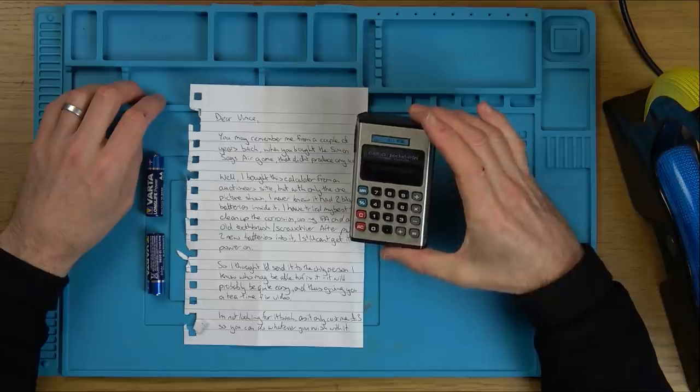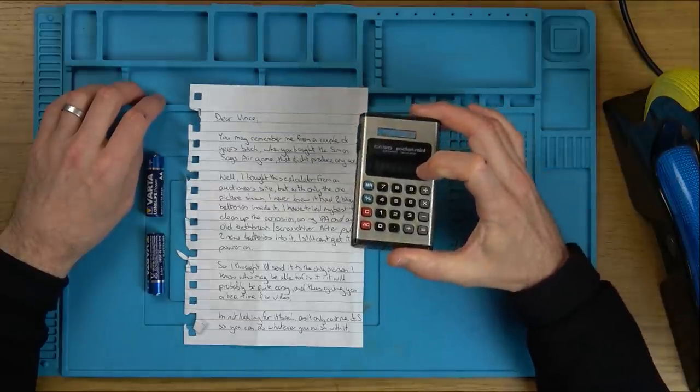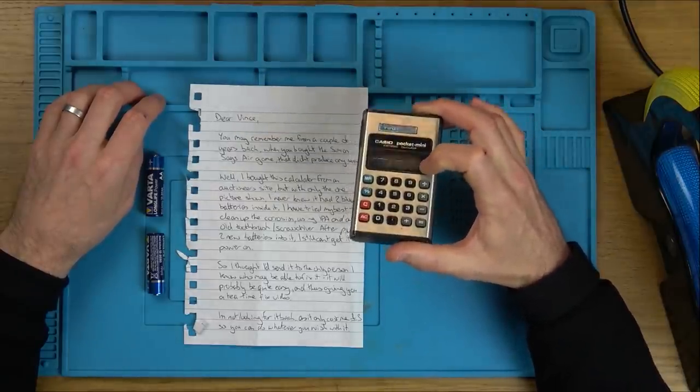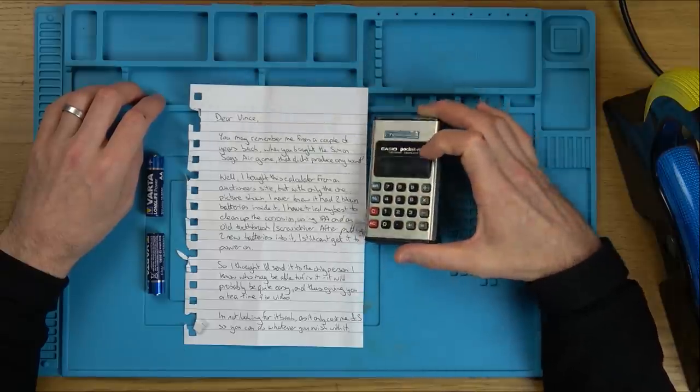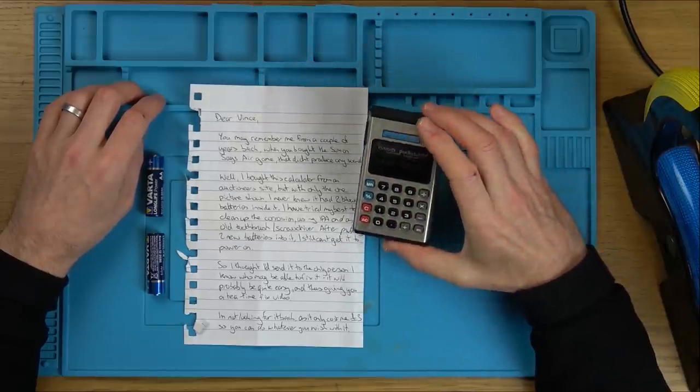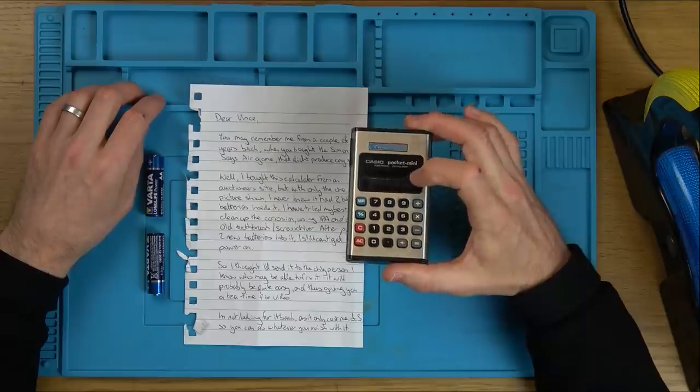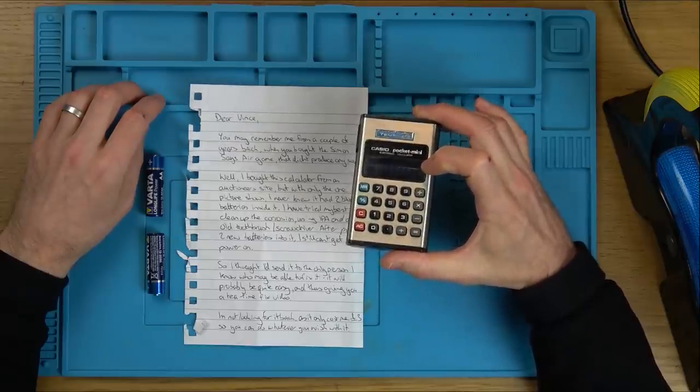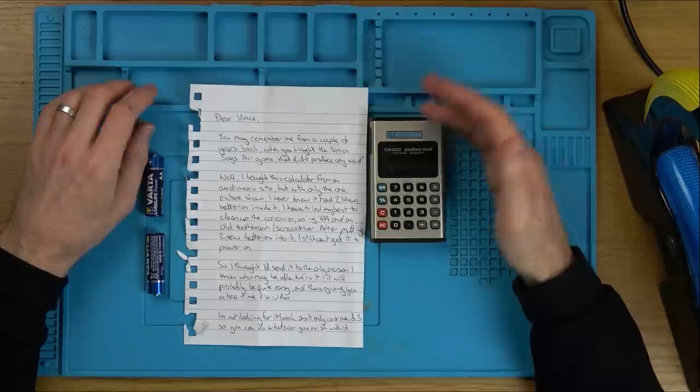So it's a little pocket mini calculator. Looks very old. That looks like it's got an LED display, I think, but I could be wrong. Maybe it's a VFD, a vacuum fluorescent display, because I have got a calculator years ago that had one of them. Anyway, this just turned up.